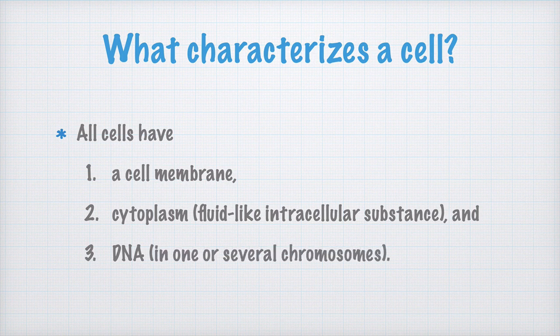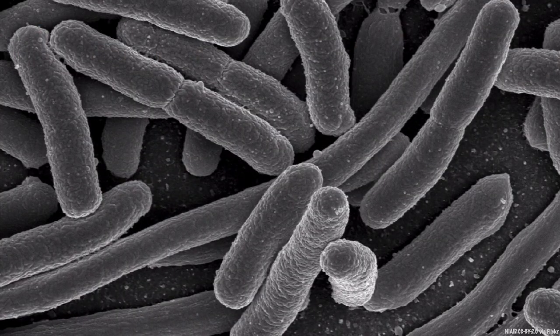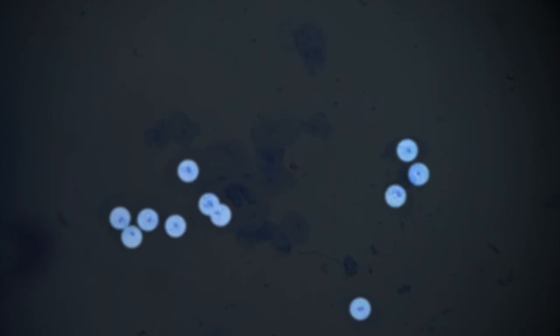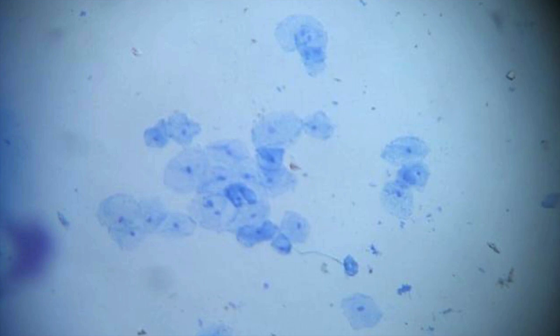Now, let's have a look at some real cells. These are bacteria photographed in a scanning electron microscope. These animal cells are actually my cells from the inside of my cheek, stained and photographed through a light microscope. The darker spots you see here are the nuclei, making the cells look rather like fried eggs, sunny side up.